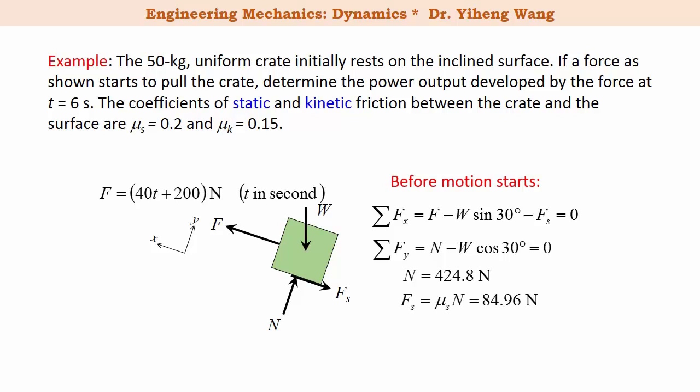From these two equations we can solve for the normal force. The maximum frictional force of static friction is evaluated by mu_s times n to be 84.96 newton. From equilibrium we can determine the applied force is 330.2 newton, which equals 40t plus 200, where t is the time in seconds. Therefore we can solve for the time to be 3.255 seconds. This is when the crate will start moving.